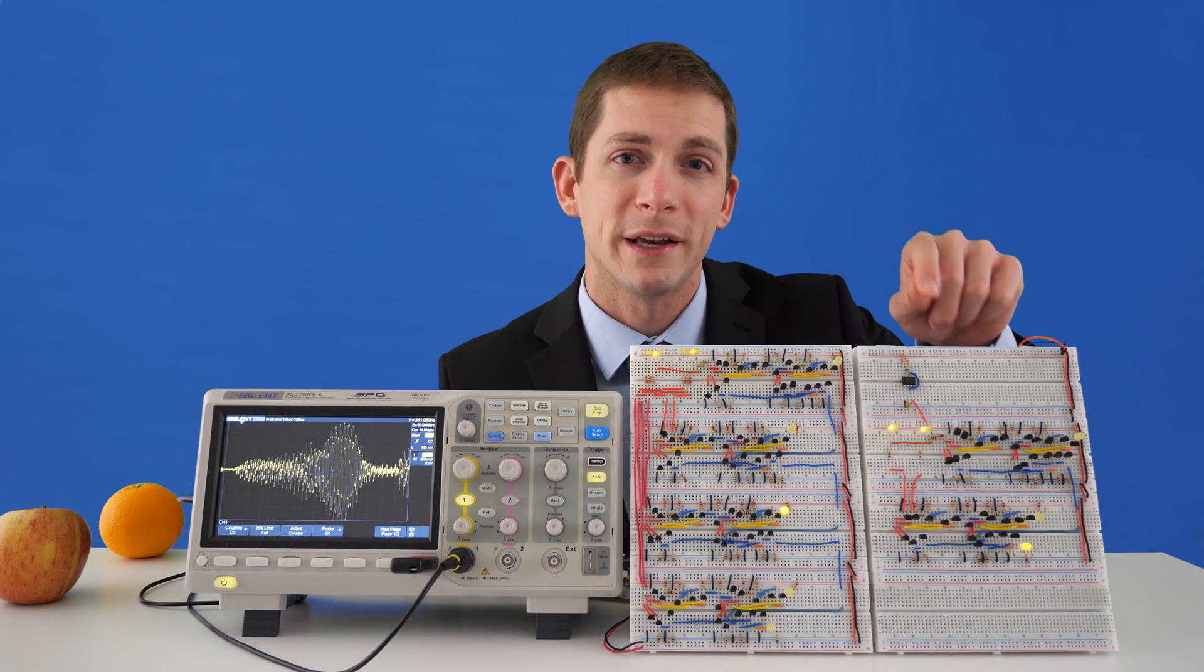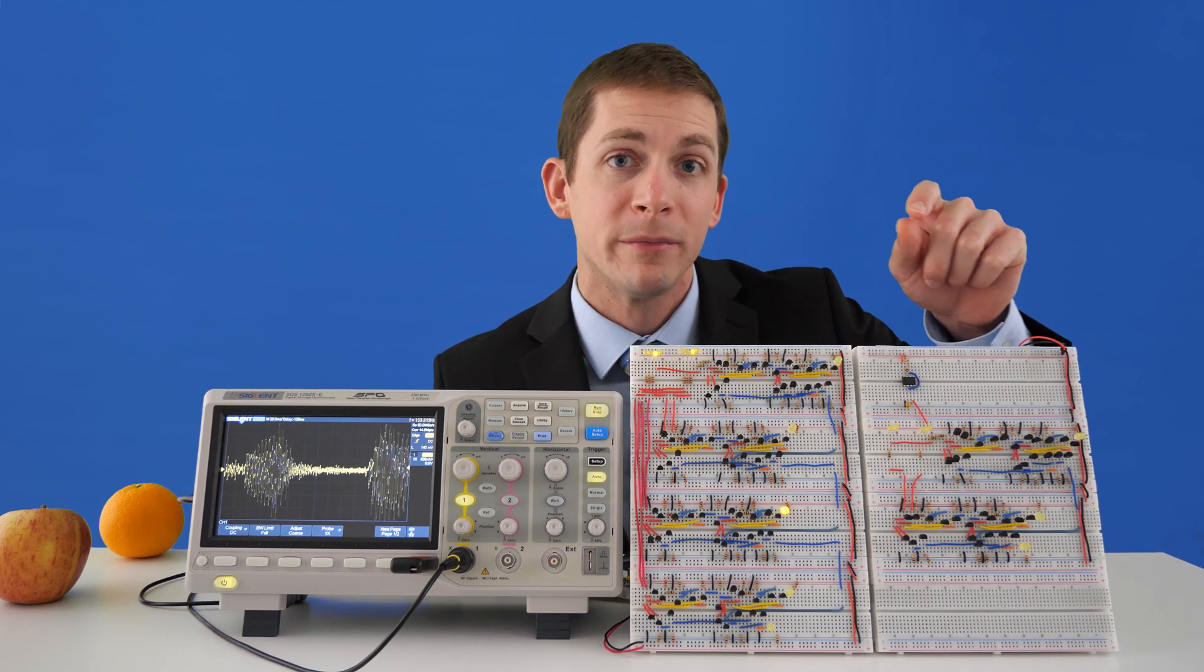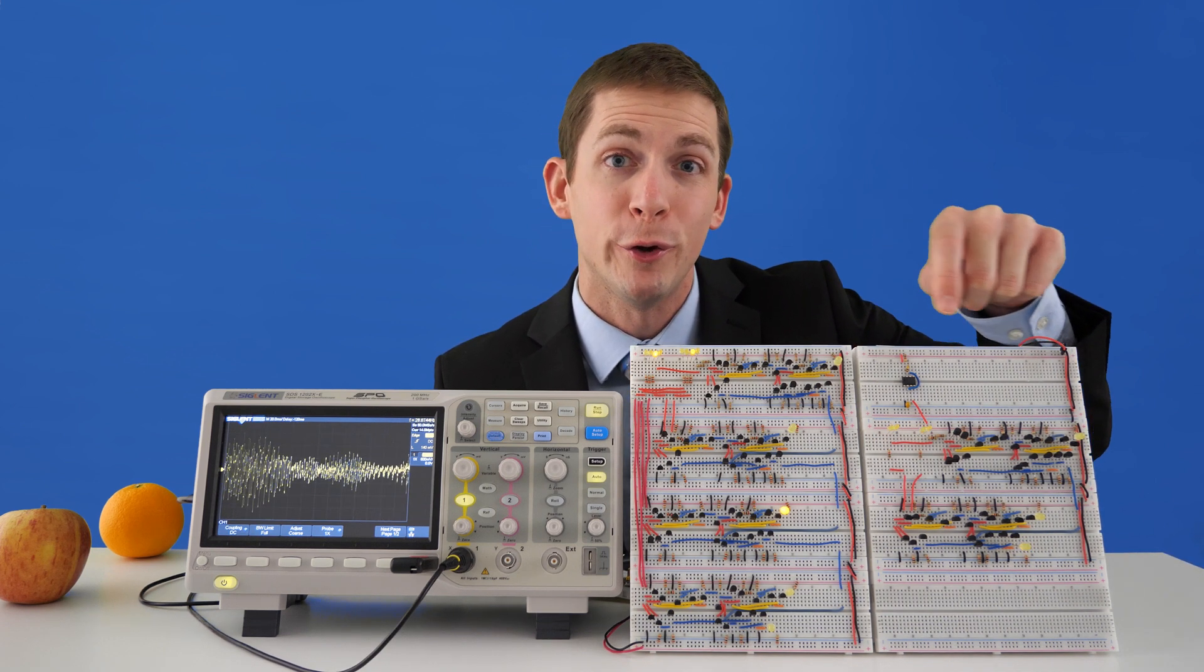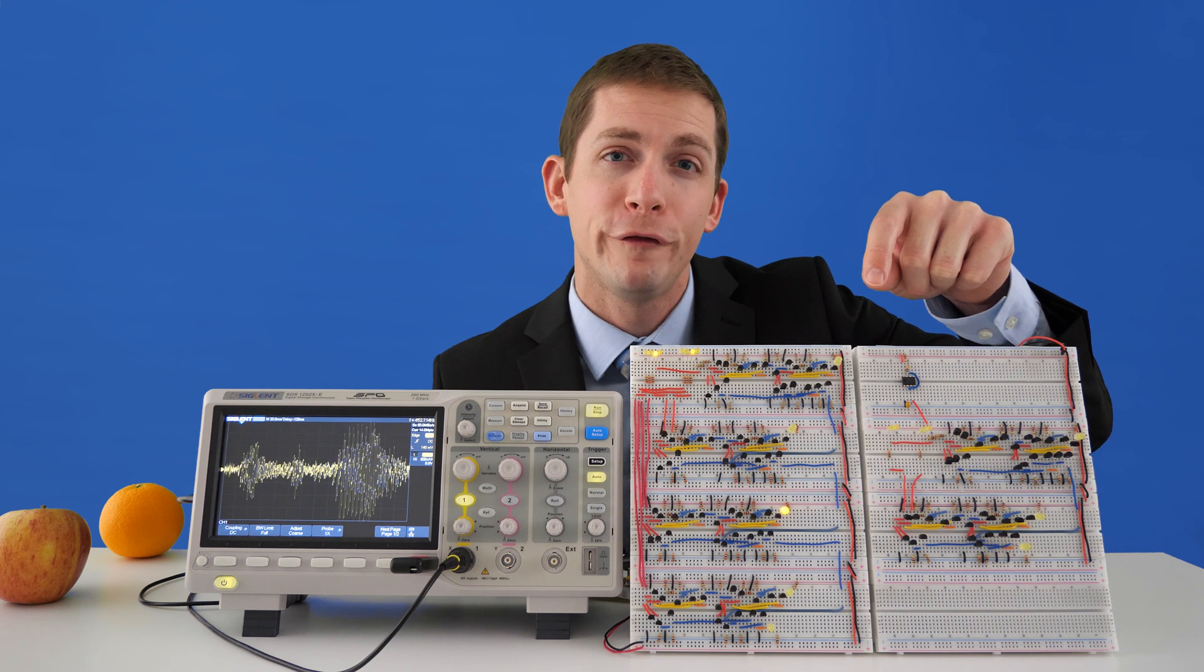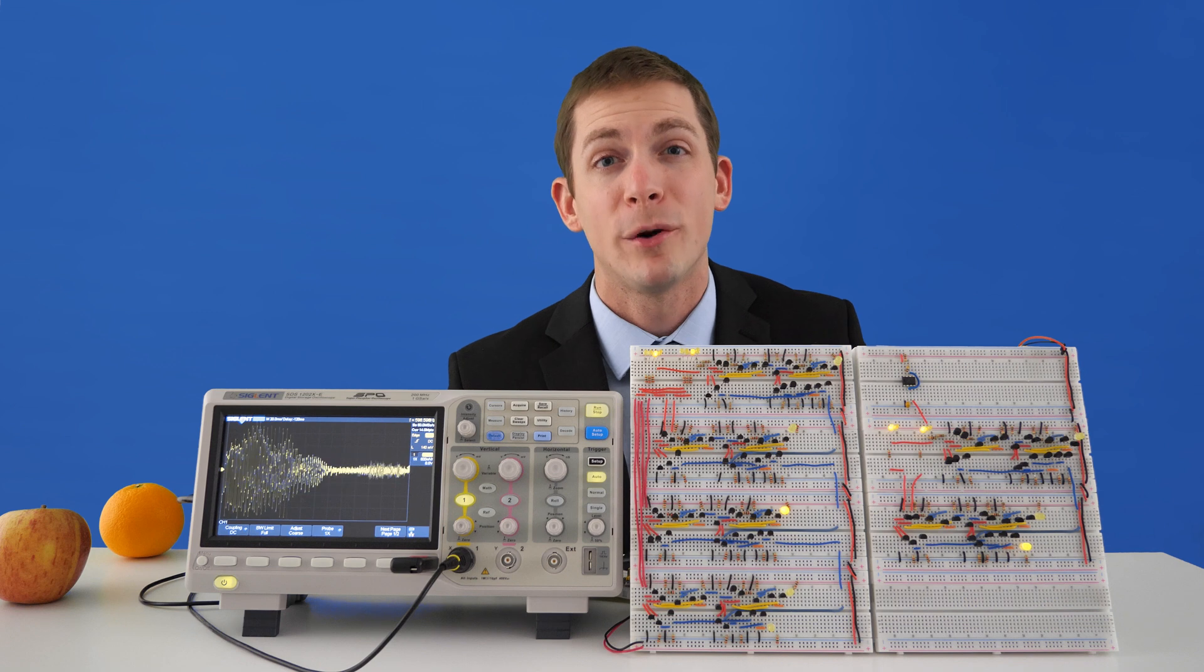Now over here, we have a two bit calculator. It is built in a similar way as the four bit calculator, except it only has two bits, which means it has two full adders going across the breadboards. Now you'll notice that the LED lights are blinking.